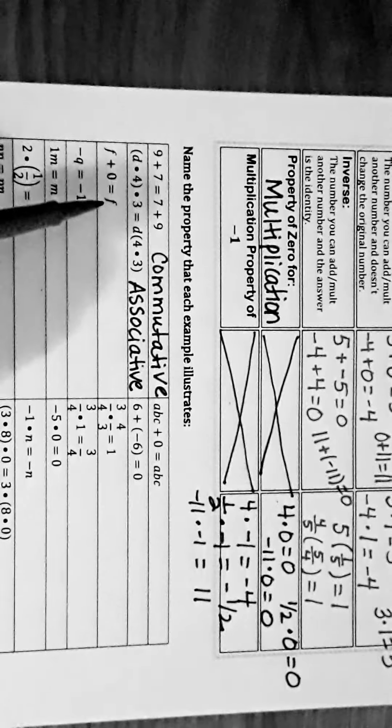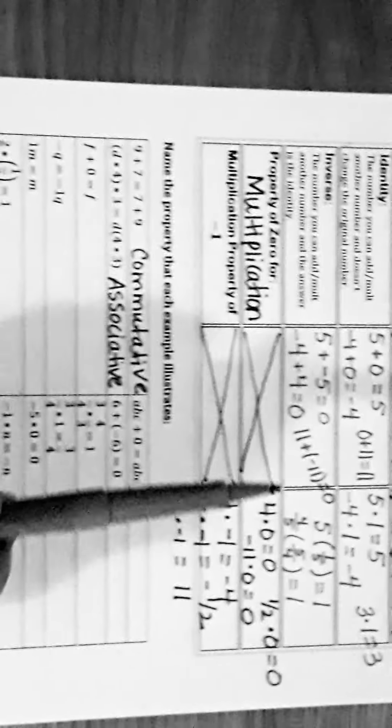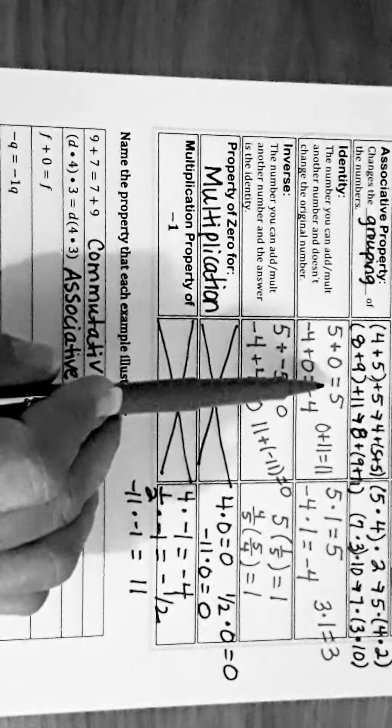So now we are going to match examples. Name the property of each example. Nine plus seven equals seven plus nine — we changed the order, so this is commutative. D times four — we changed the order. Wait, look more carefully — this is associative.